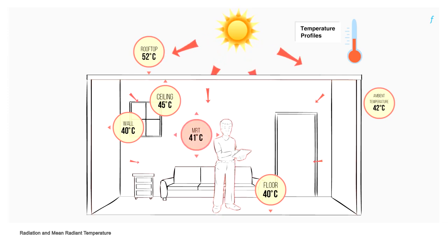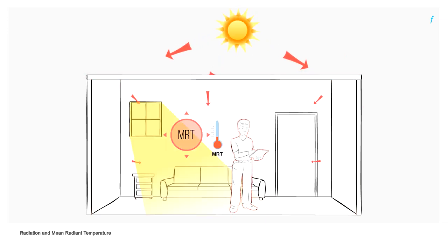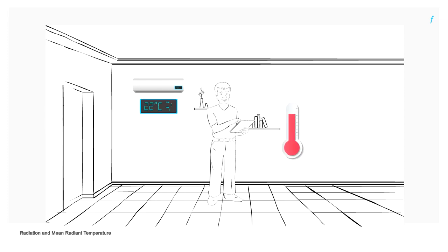Mean radiant temperature quantifies the influence of surface temperatures on human comfort. For example, a hot roof, windows exposed to direct sunlight, etc., will increase the mean radiant temperature. The higher the mean radiant temperature, the cooler the air required to achieve thermal comfort.